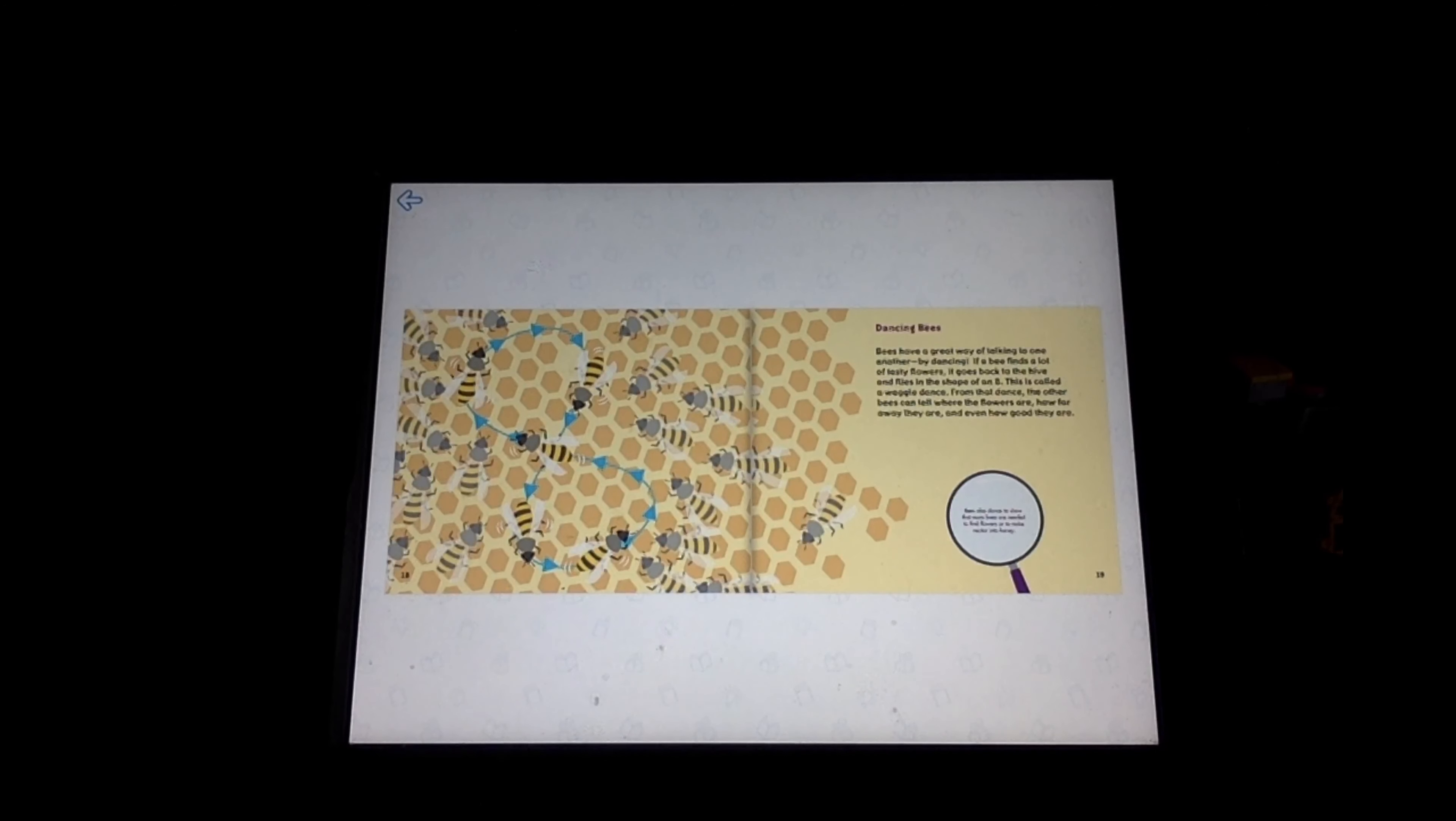Dancing bees. Bees have a great way of talking to one another by dancing. If a bee finds a lot of tasty flowers, it goes back to the hive and flies in the shape of an eight. This is called a waggle dance. From that dance, the other bees can tell where the flowers are, how far away they are, and even how good they are.